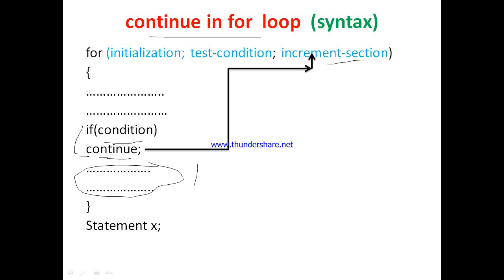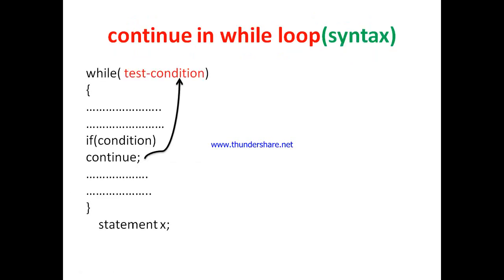After control reaches the increment section, the value of the control variable is increased or decreased. Then control is handed over to the test condition. If the test condition is true, the body of the loop executes again; if not, the loop is terminated. If continue is executed, the next part of the body is skipped. If continue is not executed, the next part of the body executes as usual.